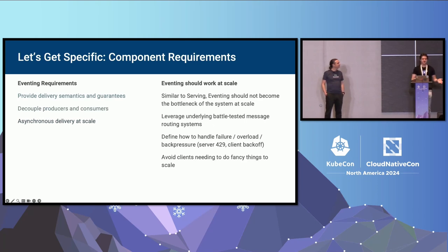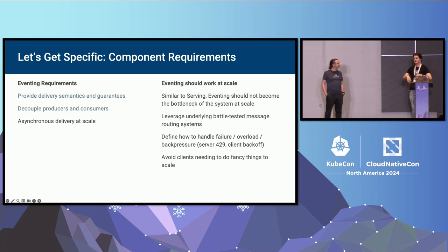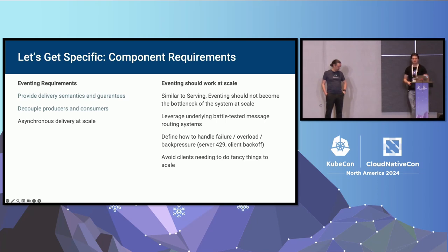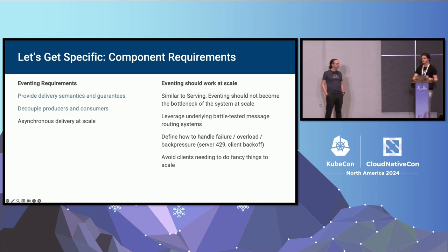Similar to serving, eventing should work at scale and not be a huge bottleneck. We want to use existing battle-tested message routing systems like RabbitMQ or Kafka to do all the message delivery. It should be able to handle failure, overload, and back pressure, and clients shouldn't need to do special things to handle producing or consuming events at scale — it should just work.